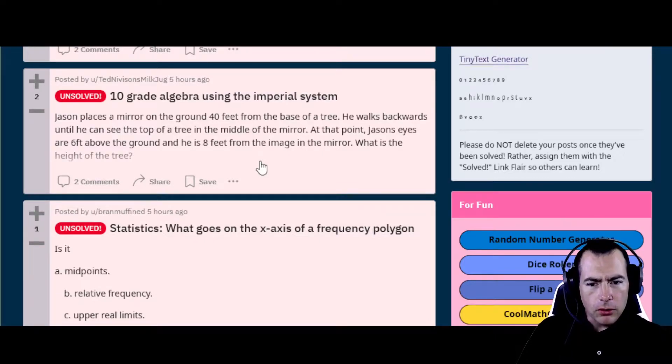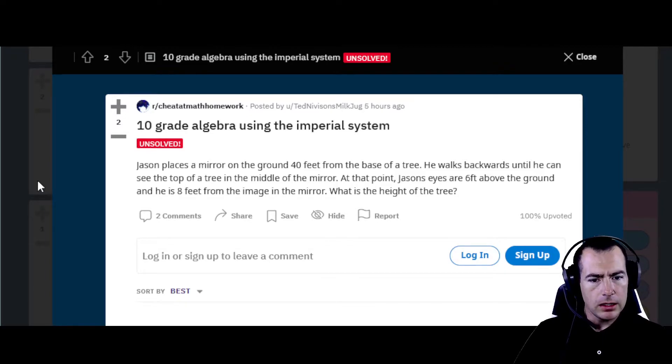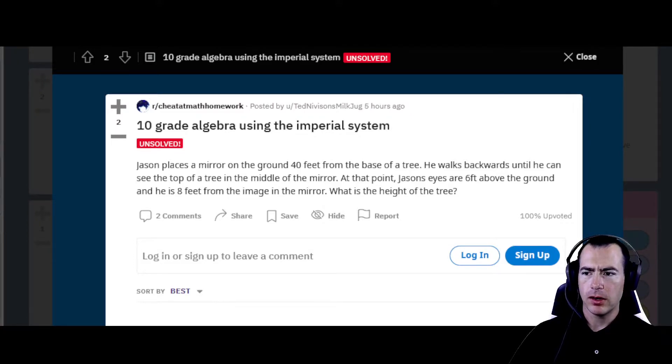So this one looks like an interesting one. 10 grade algebra using the imperial system. So it looks like we're placing a mirror on the floor. Actually let's just open this up. So Jason places a mirror on the ground 40 feet from the base of a tree. Walks backwards until they can see the top of the tree in the mirror. And at what point Jason's eyes are 6 feet above the ground. And he is 8 feet from the image in the mirror. And then we're supposed to use this to figure out the height of the tree. Okay so this will definitely require you know coming up with some sort of diagram to figure out where all those pieces are. Yeah let's carefully go over to the whiteboard and see what we can do.